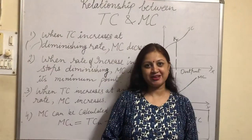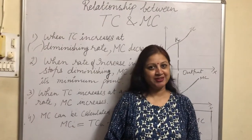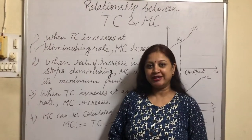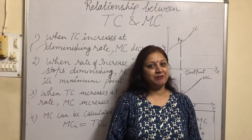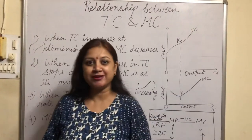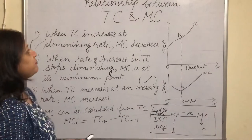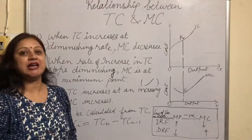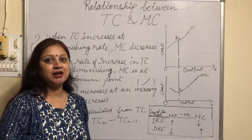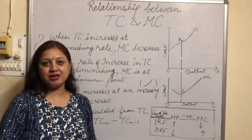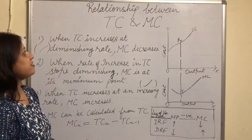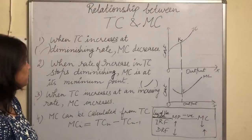Hello students, how are you? Welcome to Spoiler's Point. Today I am here with a new topic. What's the new topic? The relationship between TC and MC. What is TC? Total cost. And MC? Marginal cost. So let's see what is the relationship between these two.